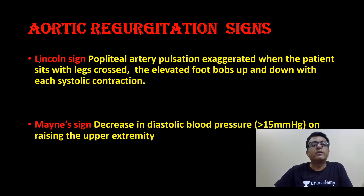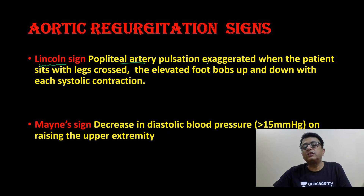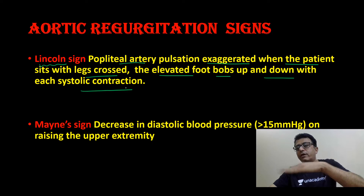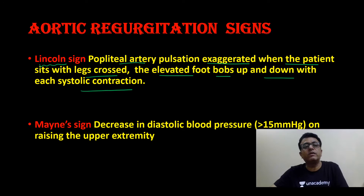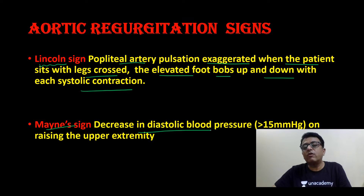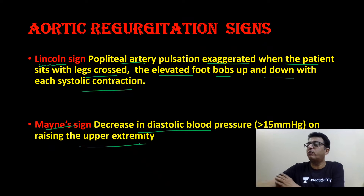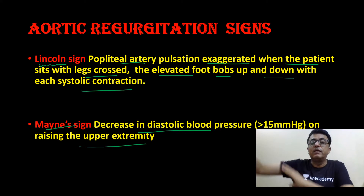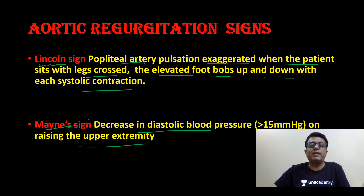Lincoln sign: popliteal artery pulsation is exaggerated when the patient sits cross-legged; the elevated foot goes up and down with each systolic contraction. Minas sign: decrease in diastolic blood pressure of more than 15 mmHg on raising the upper extremity. If you raise the upper limb and take BP, a fall of more than 15 mmHg is a positive Minas sign.